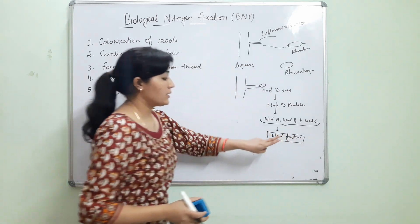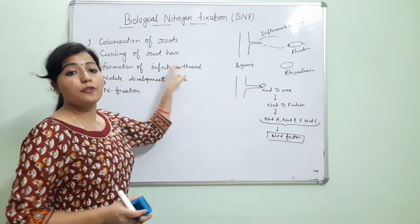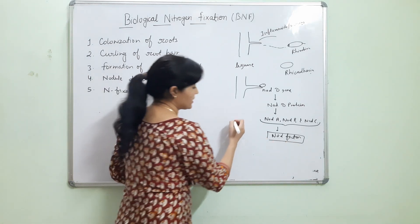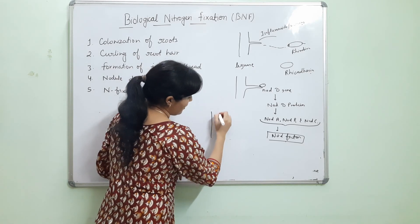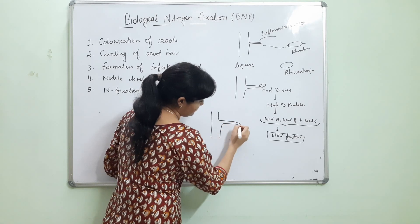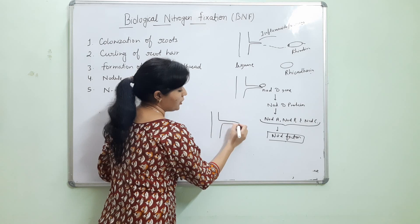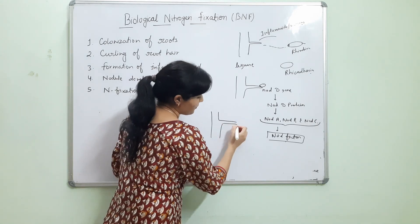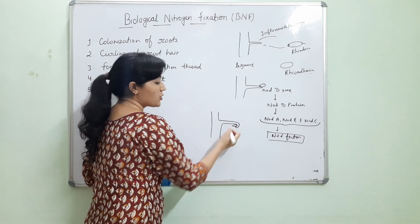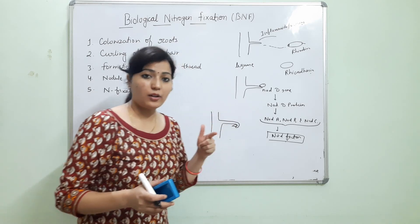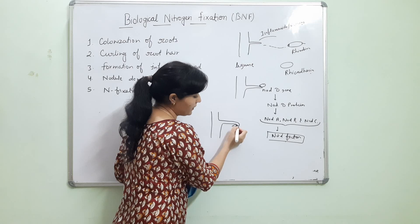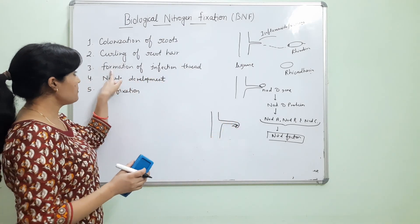The second step is the curling of root hairs. The nod factor is responsible for the curling of root hairs. As we can see, the root hair starts to curl around the bacteria. The bacteria then digests the cell wall and enters into the root cell.